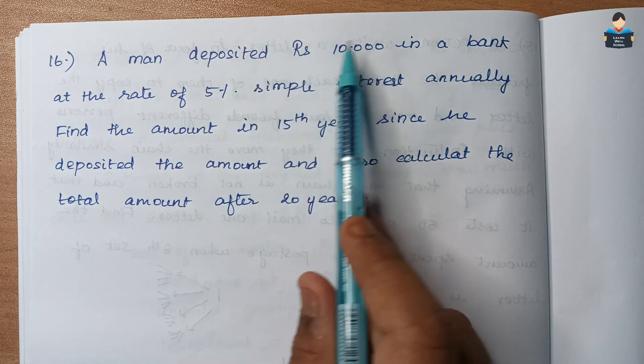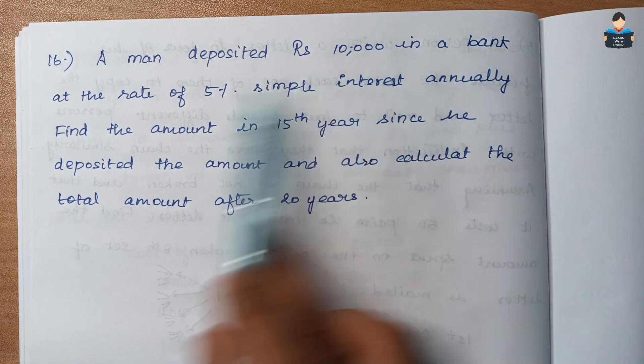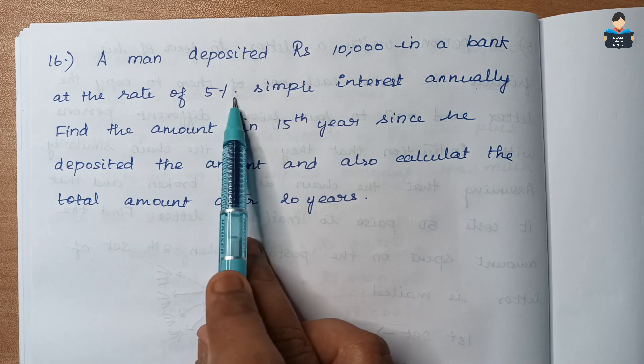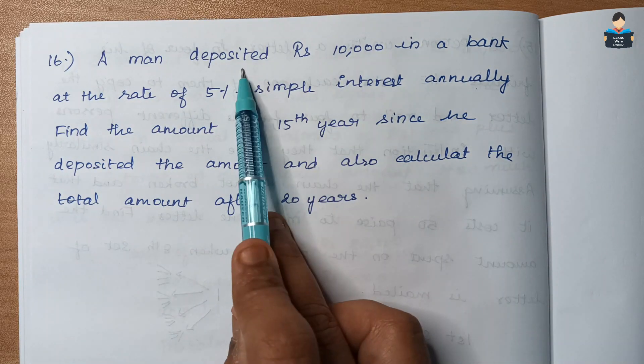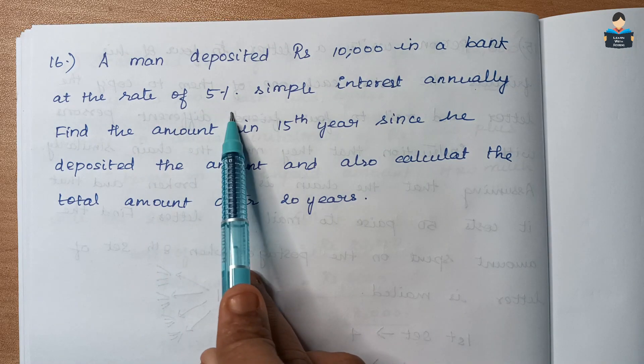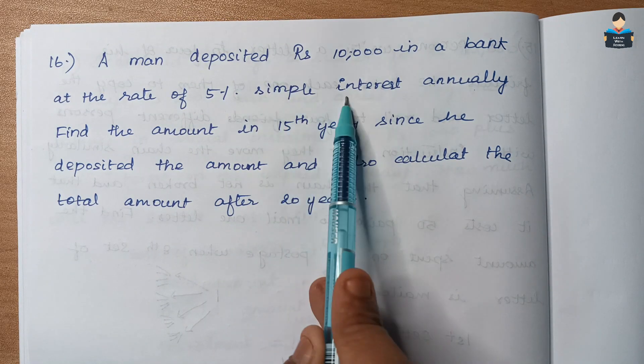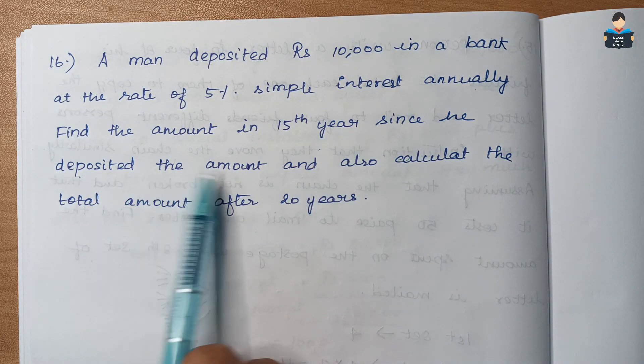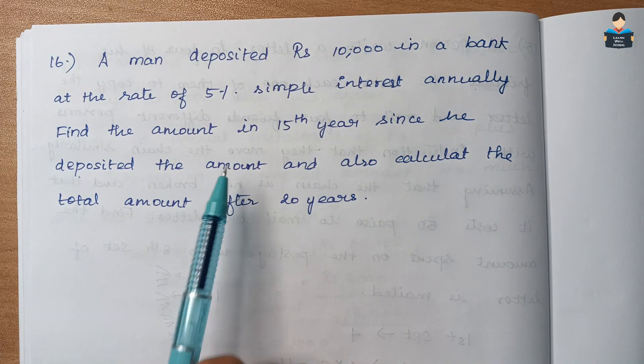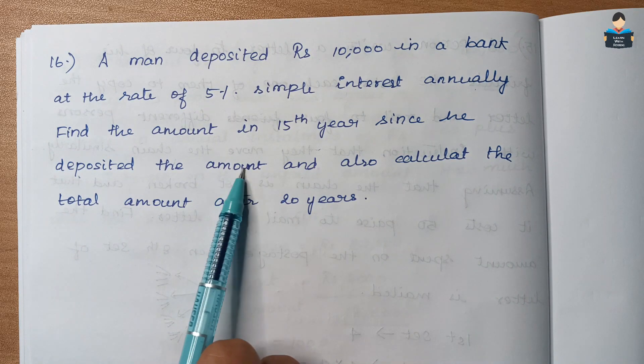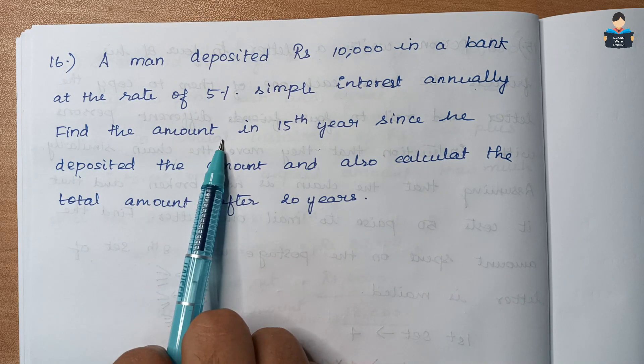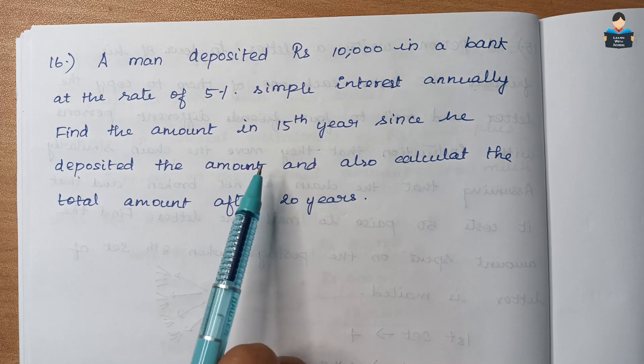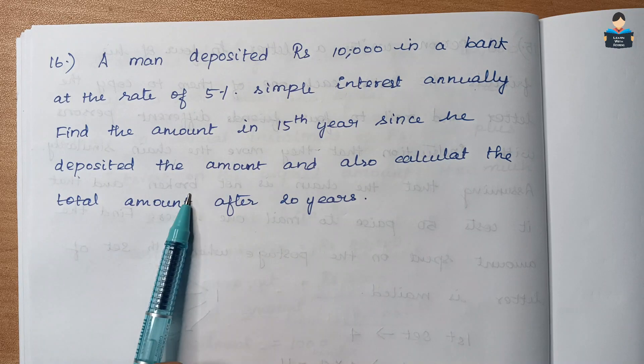16th question: A man deposited rupees 10,000 in a bank at the rate of 5% simple interest annually. Find the amount in the 15th year since he deposited the amount and also calculate the total amount after 20 years.